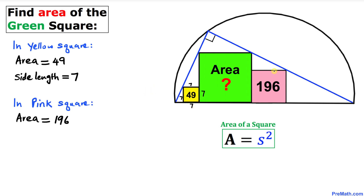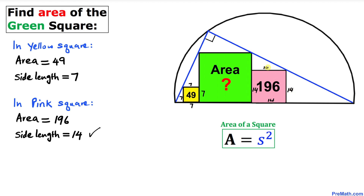Now let's focus on the pink square. We know that the area of this pink square is 196. Therefore the side length of this pink square is going to be 14 units, since 14 squared is 196. So all four sides of the pink square are 14.